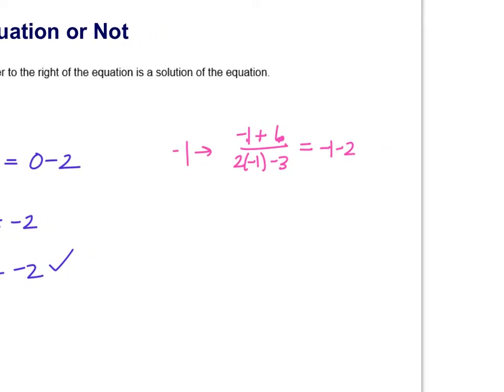Well, the numerator negative 1 plus 6 is a 5 over, right here, 2 times negative 1 is a negative 2, and negative 2 minus 3 is negative 5. Negative 1 minus 2 is negative 3. 5 divided by negative 5 is negative 1. Is that equal to a negative 3? No, it's not. So negative 1 was not a solution.